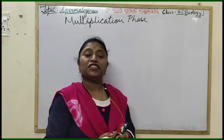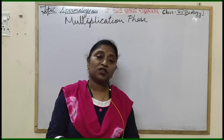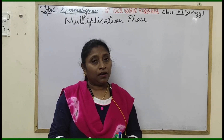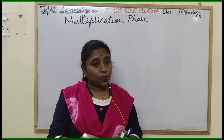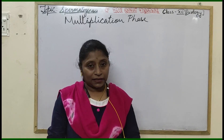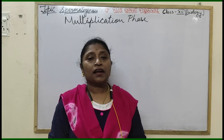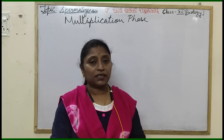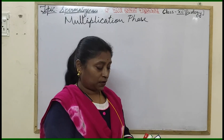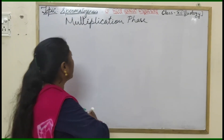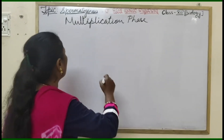In the multiplication phase, what happens? How do the primordial germ cells enter into the gonads? They divide into spermatogonia, like stem cells. How these spermatogonial stem cells divide and re-divide to produce more and more spermatogonia — we will discuss. Let us start with the PGC, primordial germ cells.